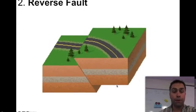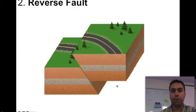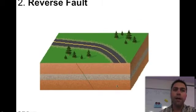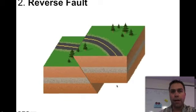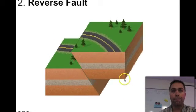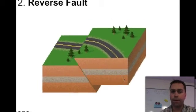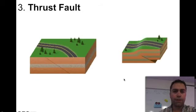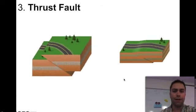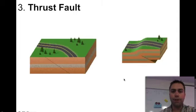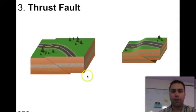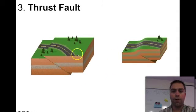A reverse fault is the reverse of a normal fault. If normal was caused by tension, reverse is caused by compression, and the hanging wall moves up. A thrust fault is like an extreme reverse fault, also caused by compression, where the hanging wall essentially plows over the foot wall.